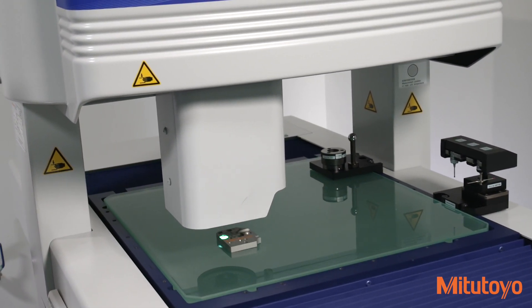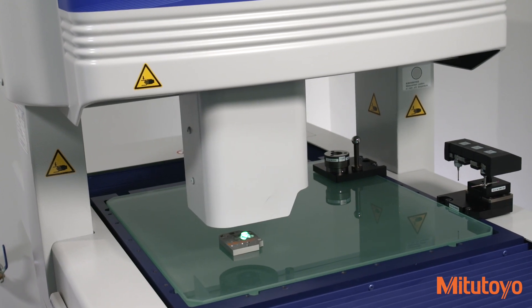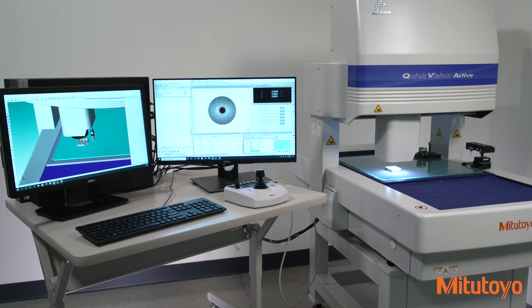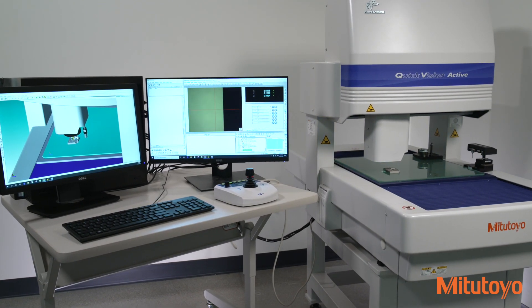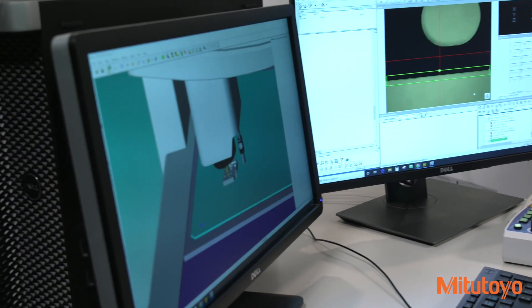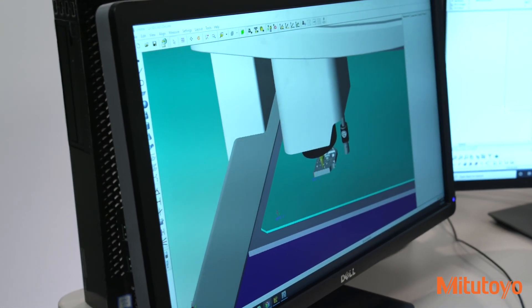Automatic measurement routines are available either with the click of a button or with image recognition. The automatic edge detection function provides superior reproducibility of measurements, regardless of an operator's skill level. The pattern search function automatically recognizes image patterns to create part alignment and feature measurement.